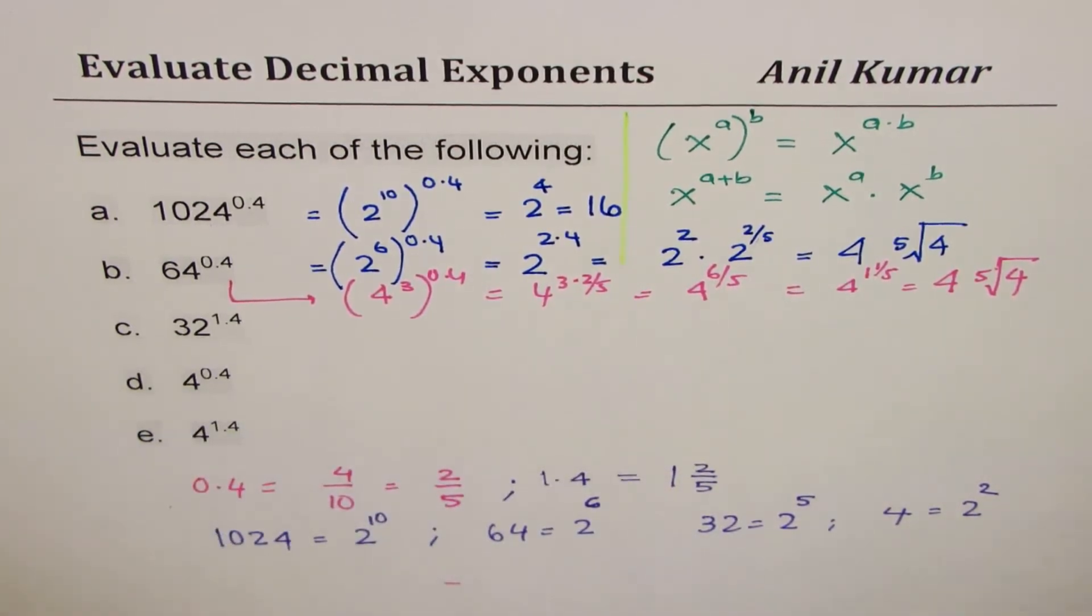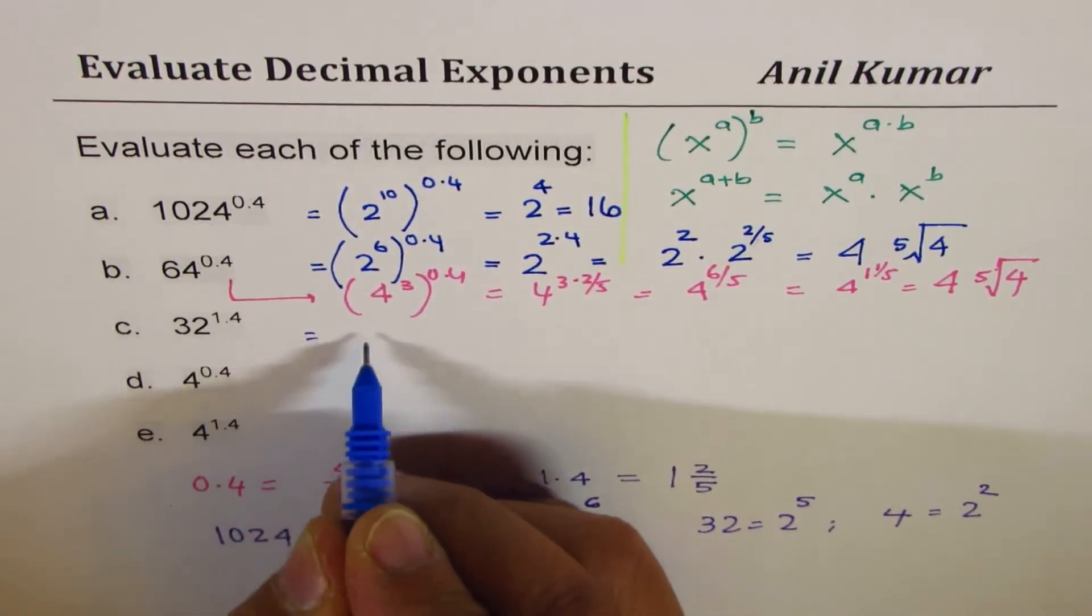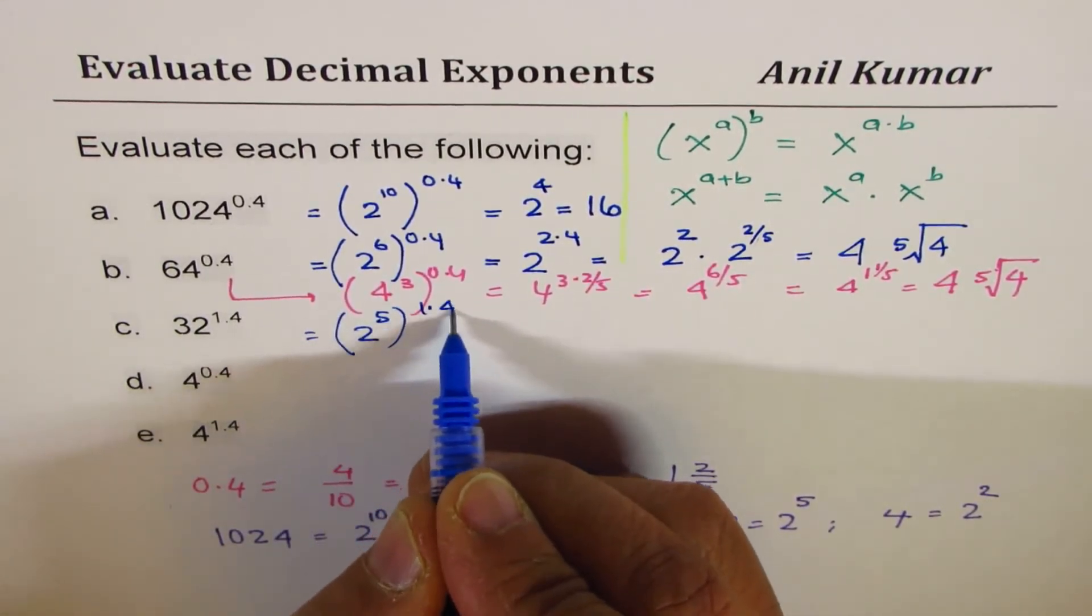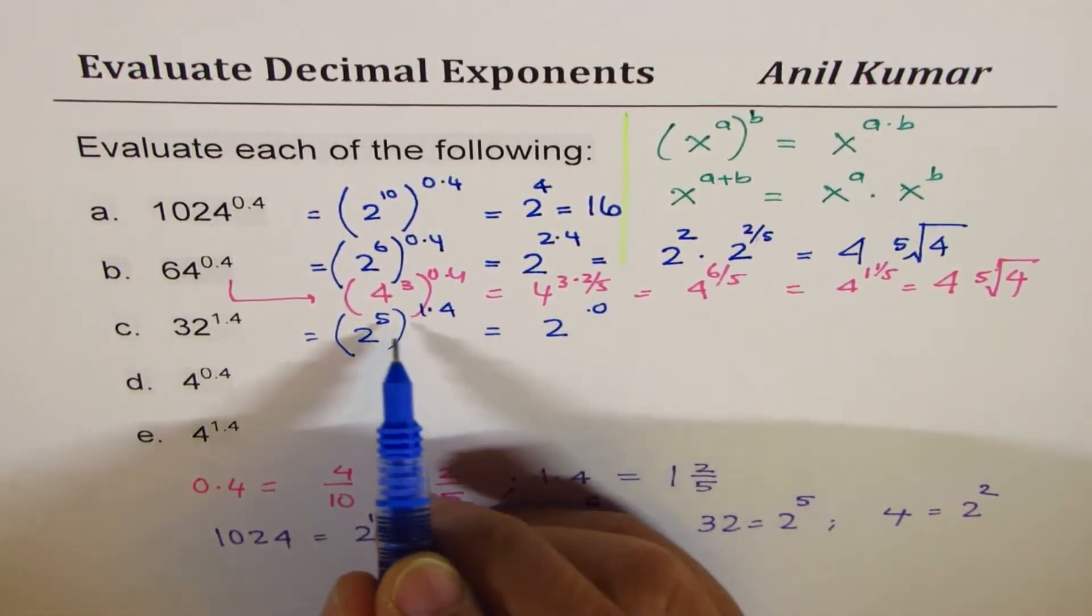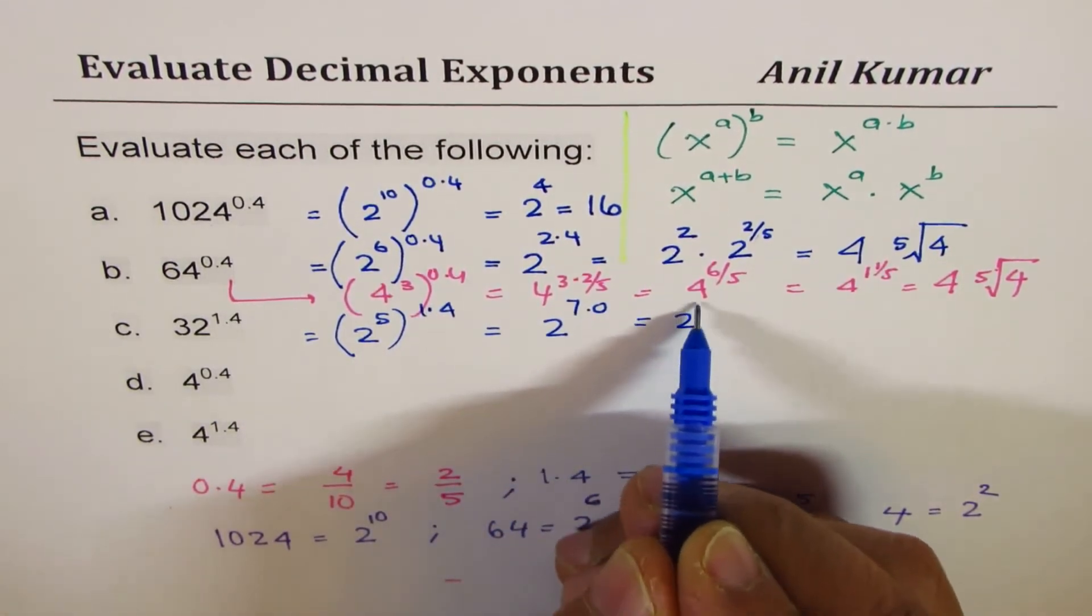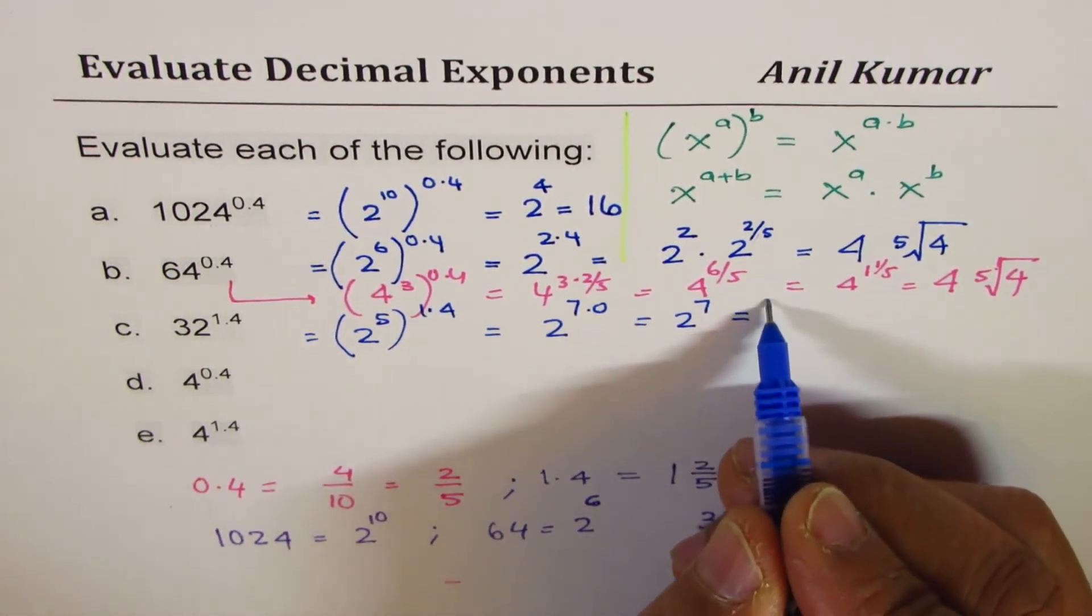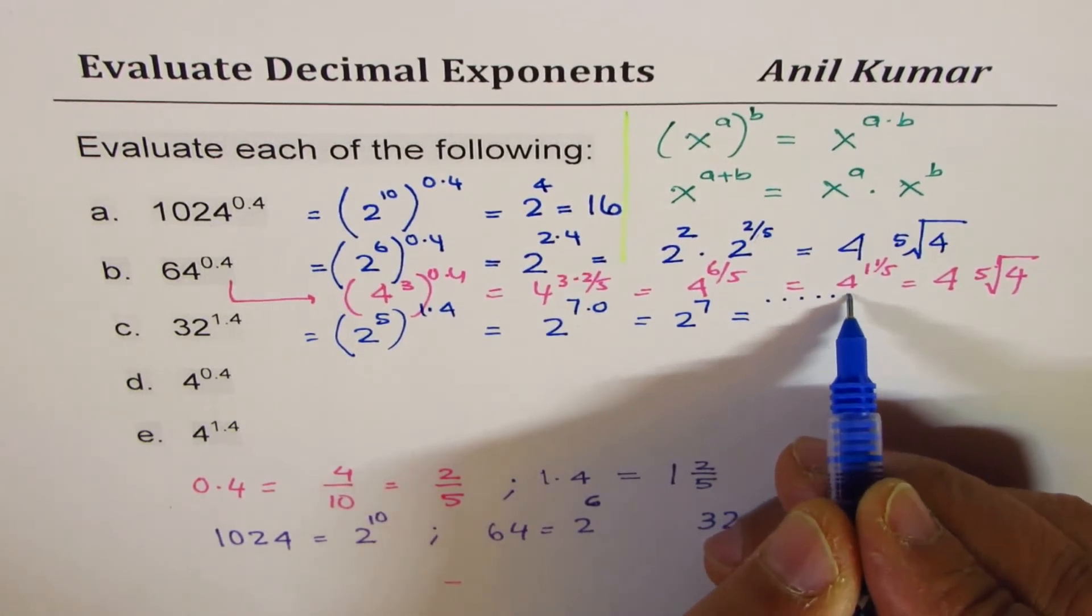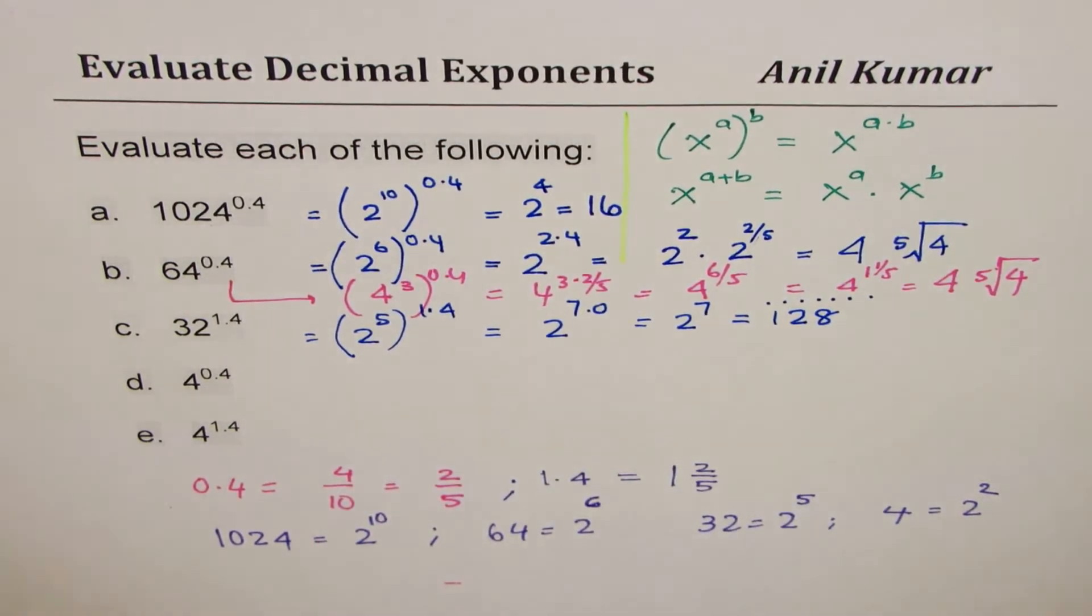Let's look into 32. 32 as a power of 2 could be written as 2 to the power of 5. And we'll multiply this by 1.4. So we get 2 to the power of 5 times 4 is 20. 5 times 1 is 5 and 2 is 7. So we get 2 to the power of 7. Now 2 to the power of 7 is 2, 4, 8, 16, 32, 64, 128. So you get 128 as your result.